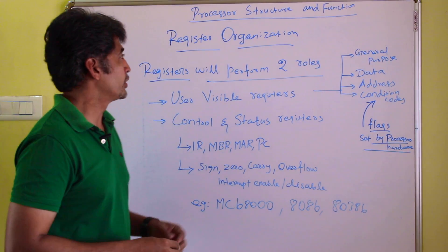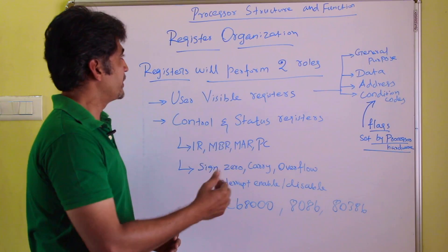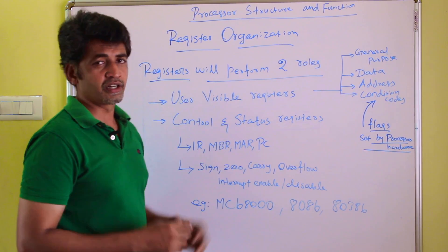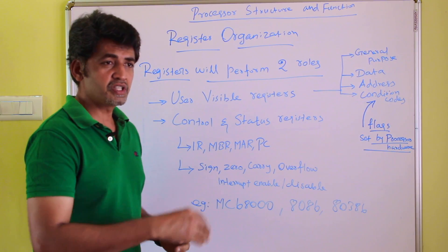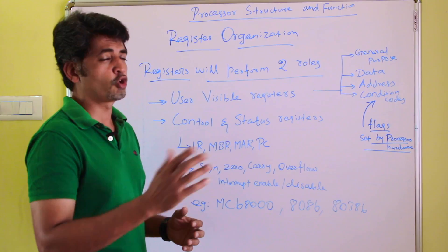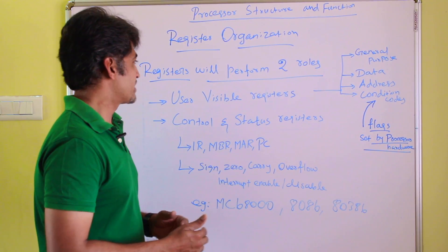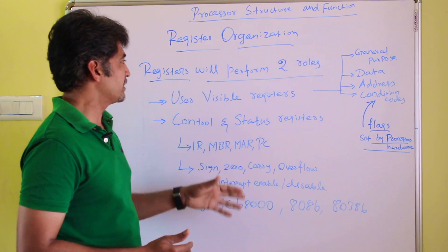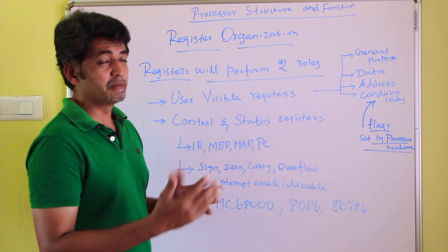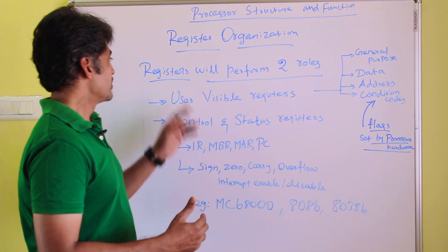In this video we are going to continue the same topic: process structure and function. Here, another major important concept is register organization. In the previous video we discussed the organization of the CPU, its internal components, and how it functions. In this topic we are going to discuss what are the types of registers and how they help the CPU for basic arithmetic and logical operations.